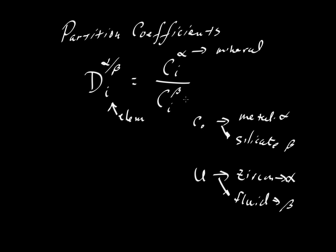And it could be that both alpha and beta are minerals. We could look at the partitioning between nickel and the way it's partitioned between, say, orthopyroxene and clinopyroxene, for example. Well, we're going to look at one last example.